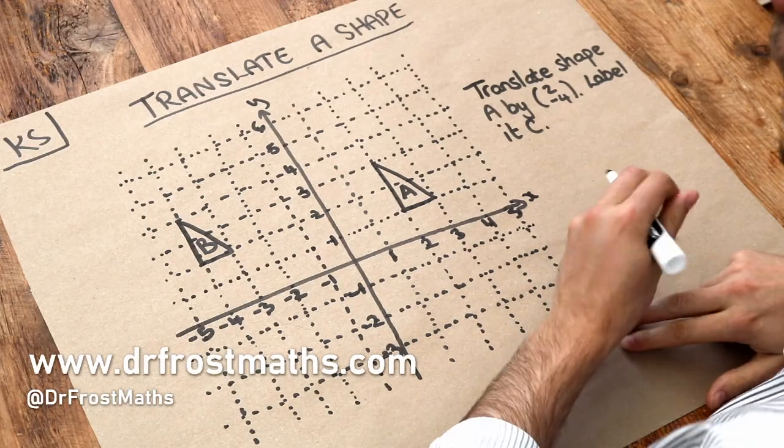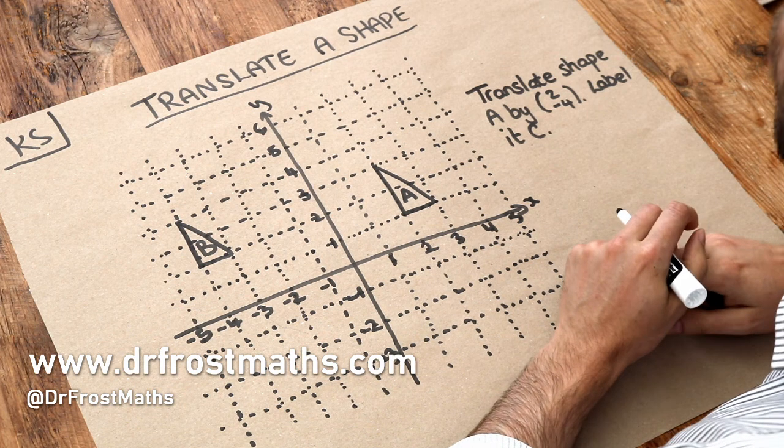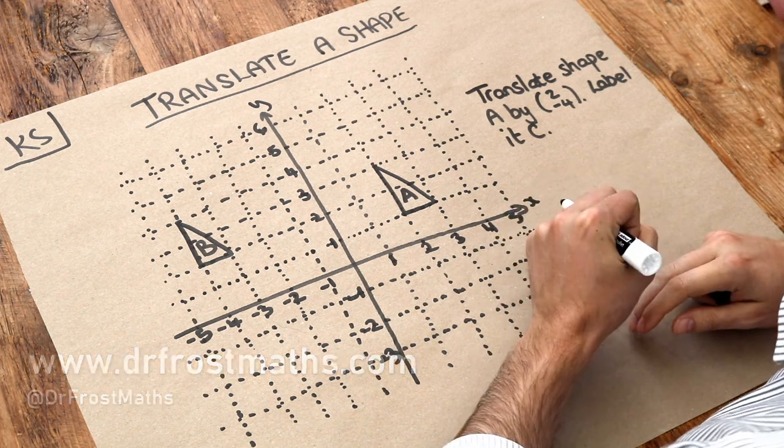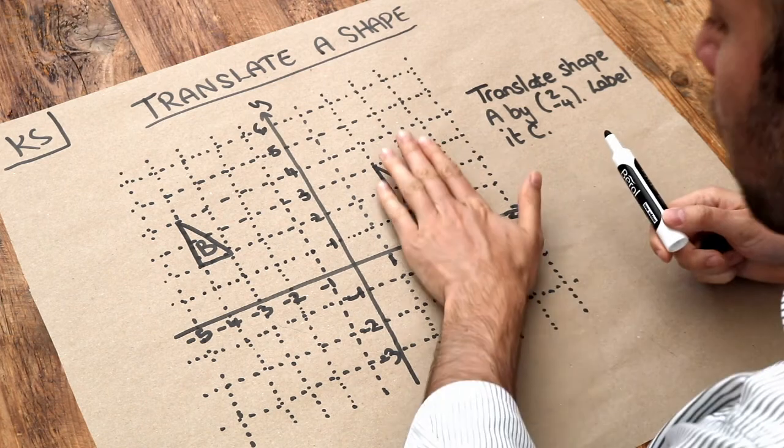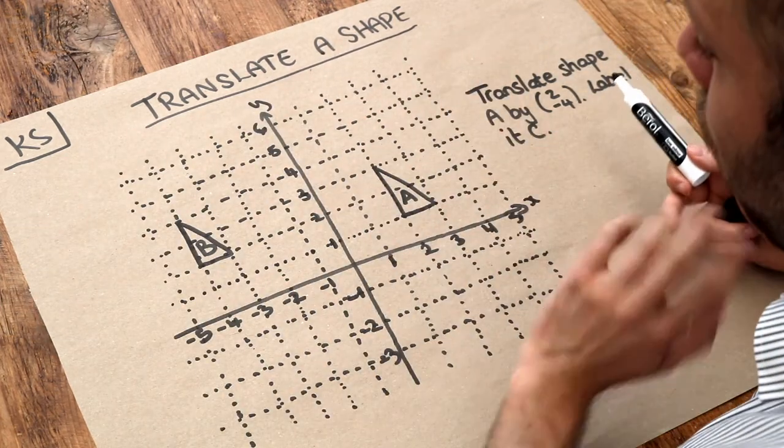Hello and welcome to this Dr. Ross Mass key skill video on translating a shape. Recall from the video on describing a translation that a translation is when the shape moves without getting bigger or smaller or flipping over or rotating.